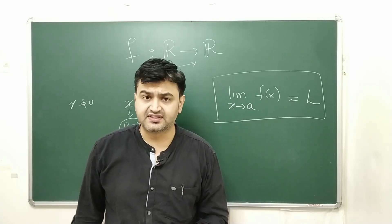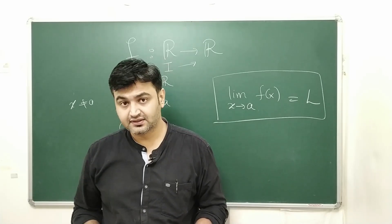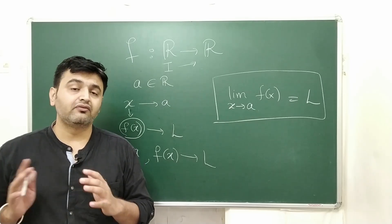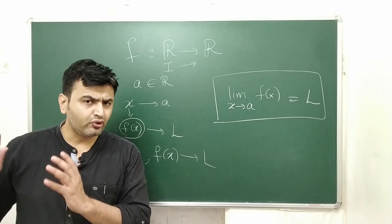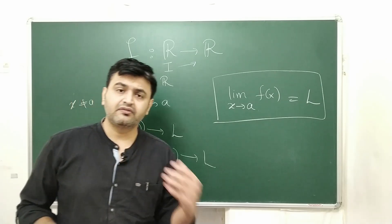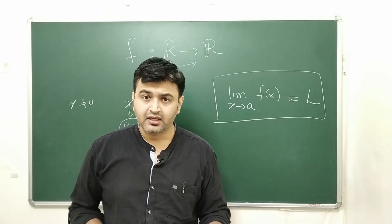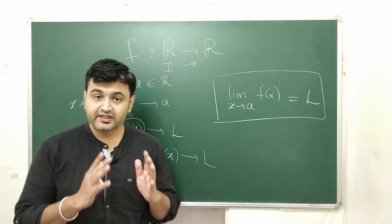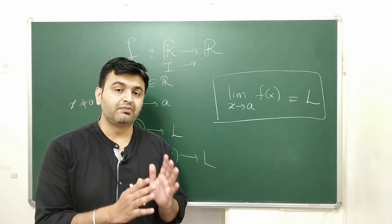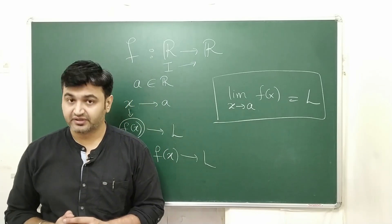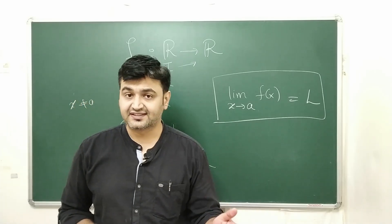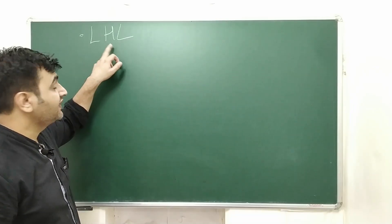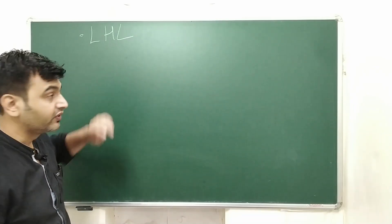Whenever you see such a notation, that means L is the limit of the function when X is approaching towards a. Now one can ask: does the limit of a function always exist, or when does it exist? There is a proper definition involving epsilon and delta, but I won't go into that. There is another way of finding the limit using the left hand limit and the right hand limit.